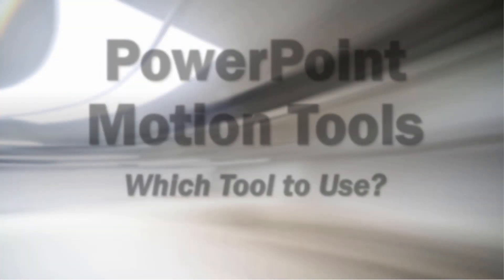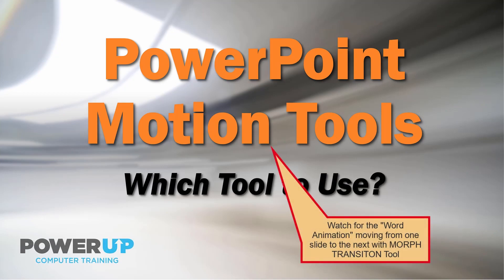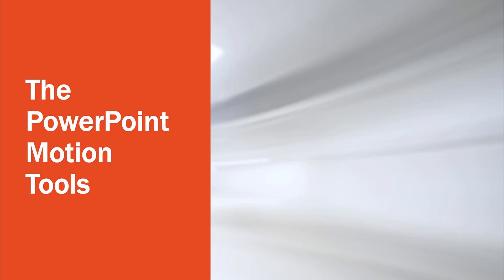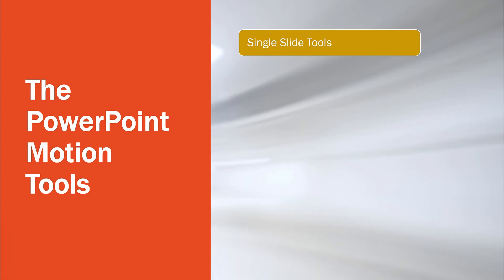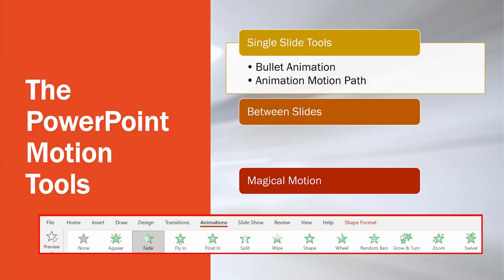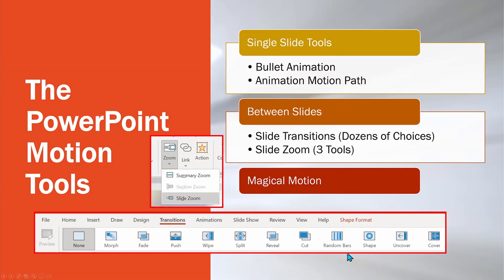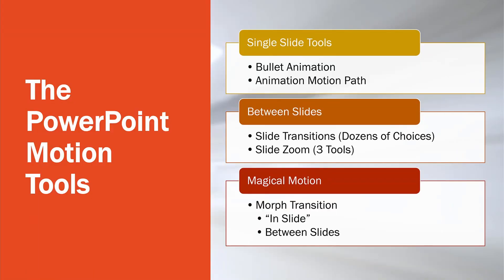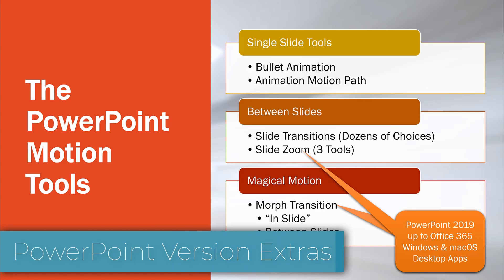PowerPoint gives you options to add life to your presentation with motion, but which tools should you use? The single-slide tools are centered around the animation menu, self-contained on a single slide, while the transition menu tool and the separate slide zoom tool animate between slides. Lastly, there's the morph transition, which appears to be just between slides but can provide fabulous magic giving amazing life to what appears to be a single slide. Note that the slide zoom and morph tools work only in the most recent versions of PowerPoint.